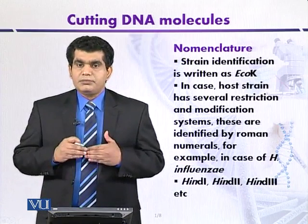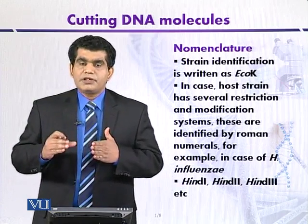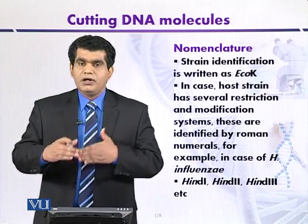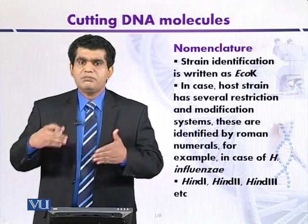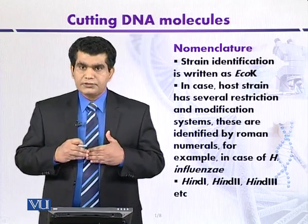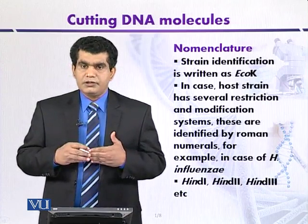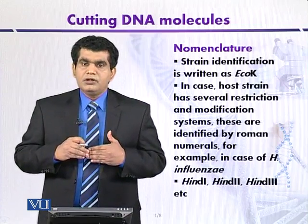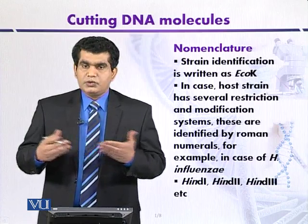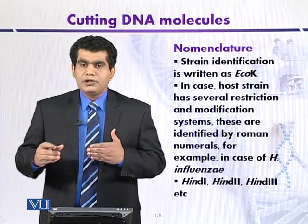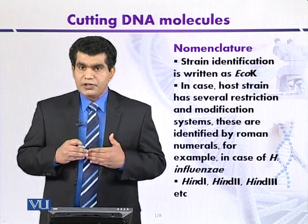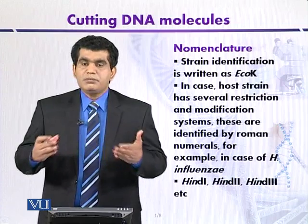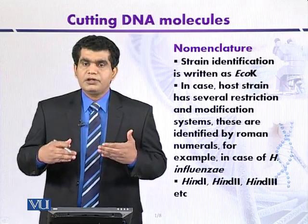In the second step, the name of the strain can also be included. A single species of microbe may be represented by different strains isolated from different ecological sites. In the case of Haemophilus influenzae, strain D has been reported to produce different types of restriction enzymes.